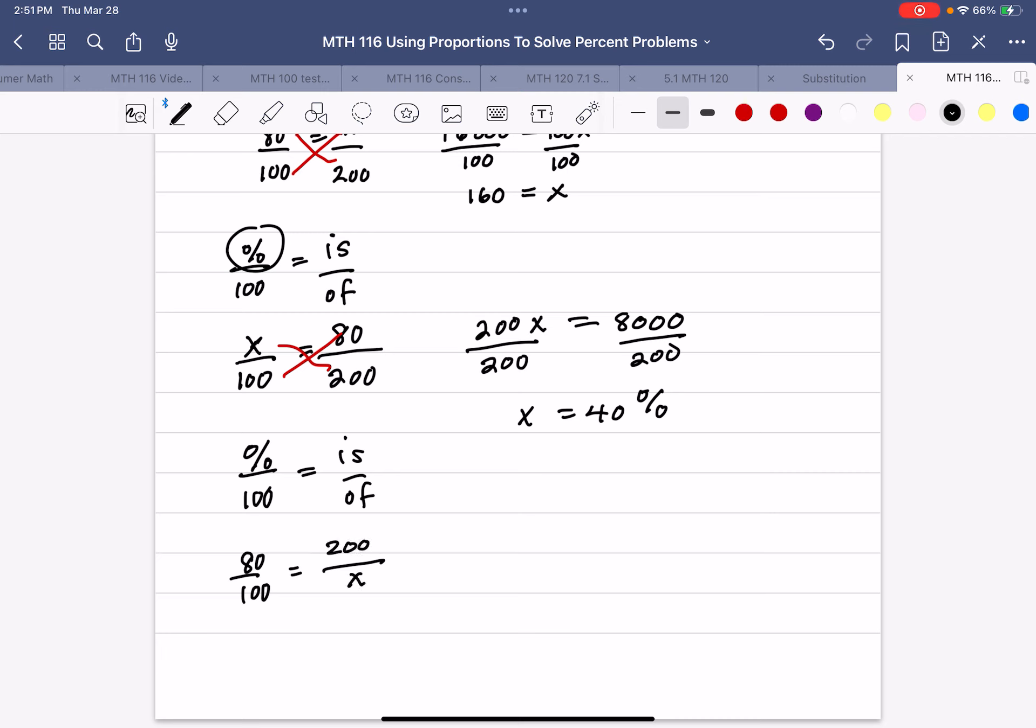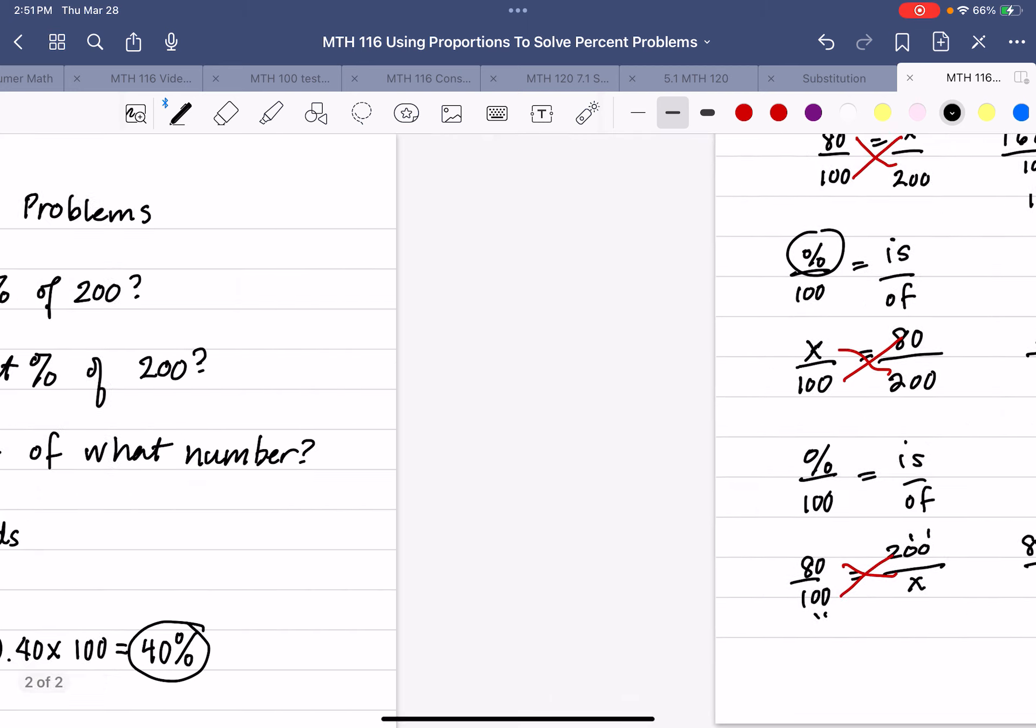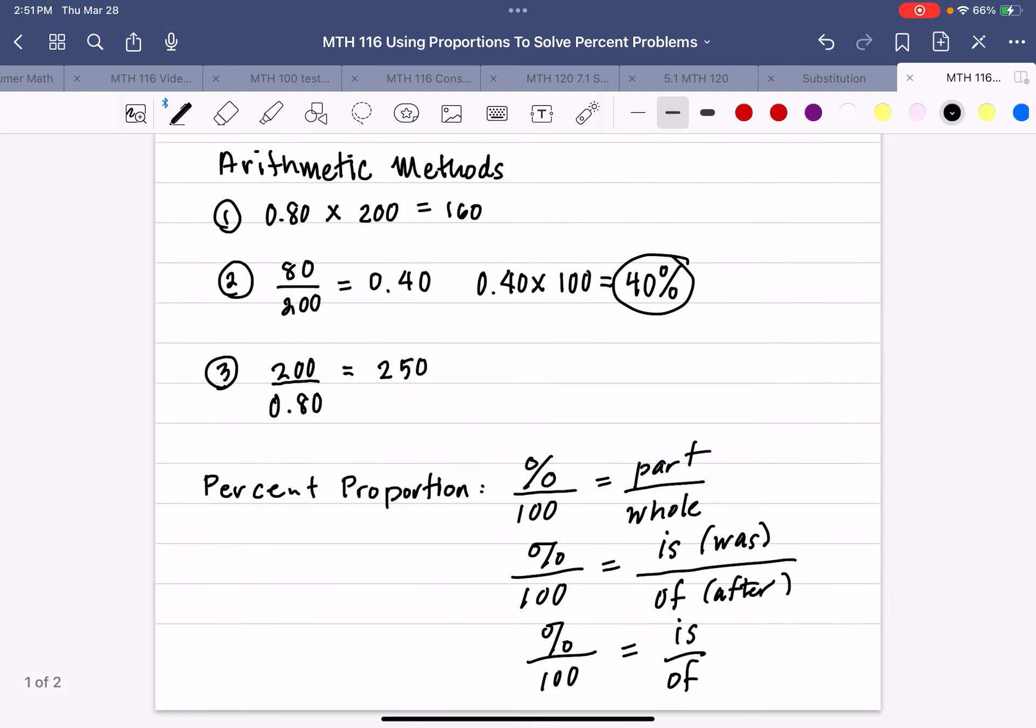Using the same method for proportions, I get 80x equals 20,000, because I've got 1, 2, 3, 4 zeros, divide by 80. So x is 20,000 divided by 80, and we get the answer 250. And so, using arithmetic, notice we got 250.